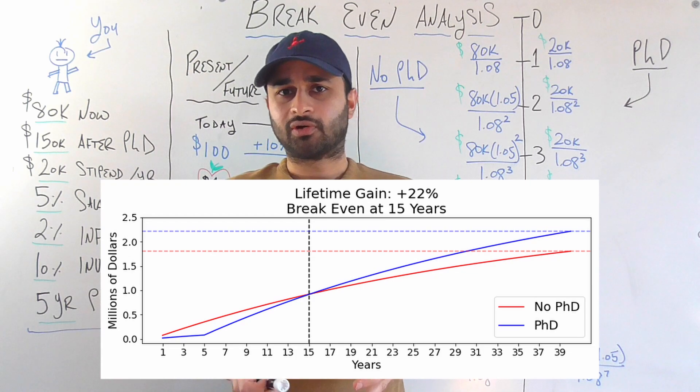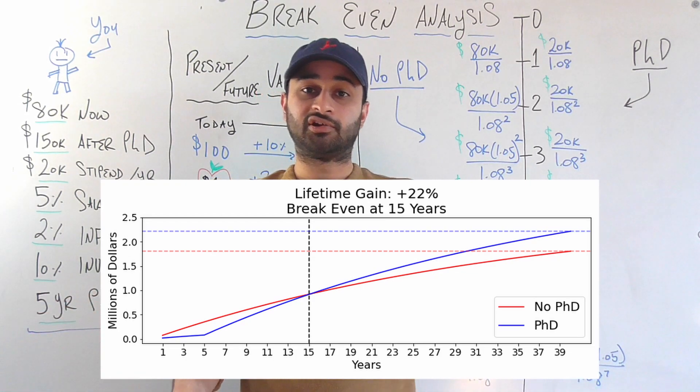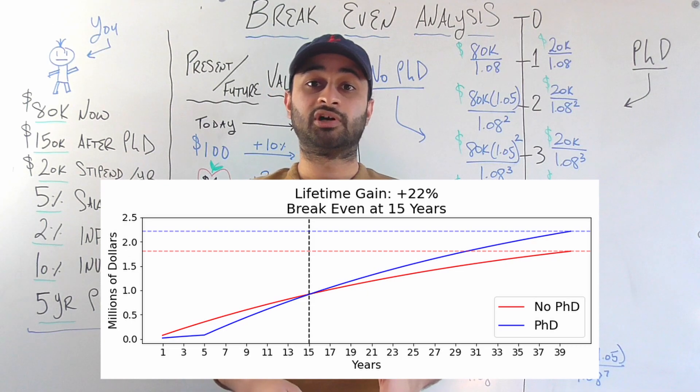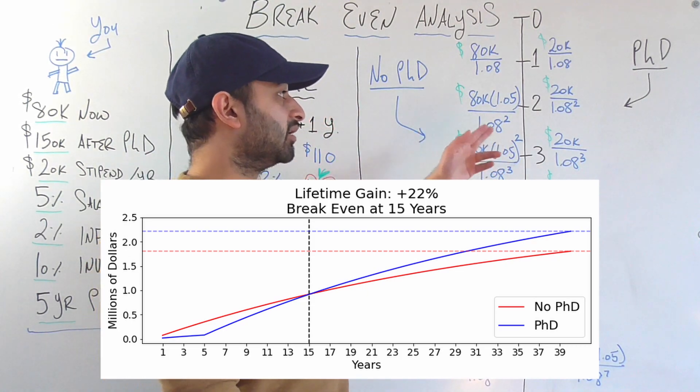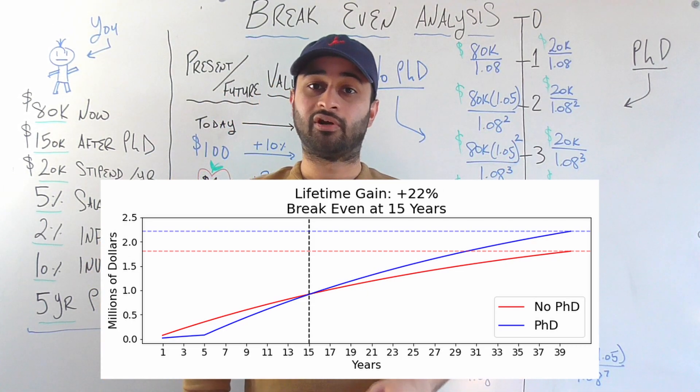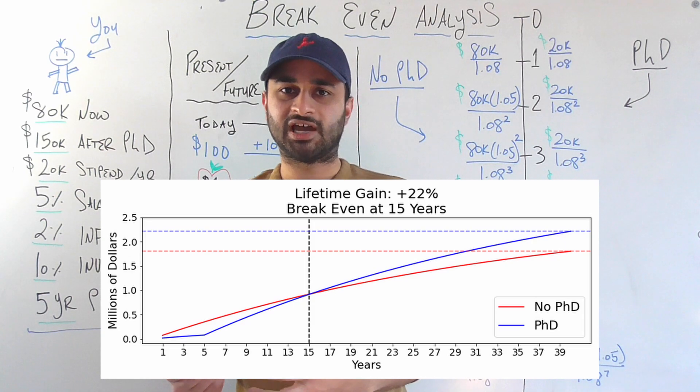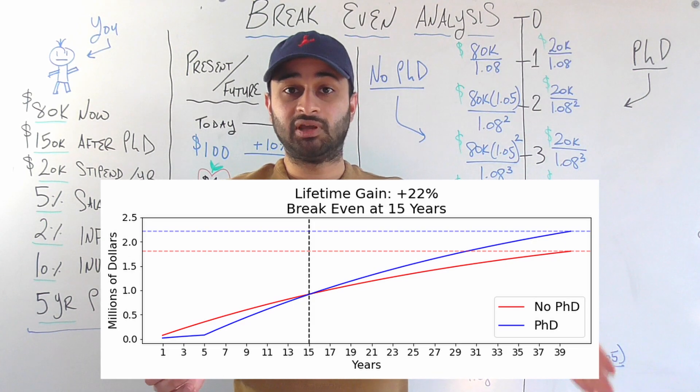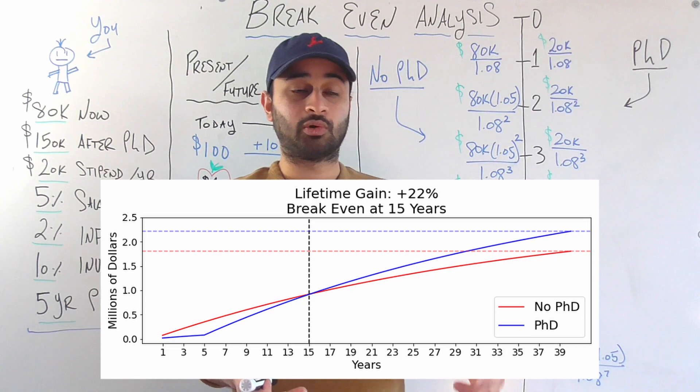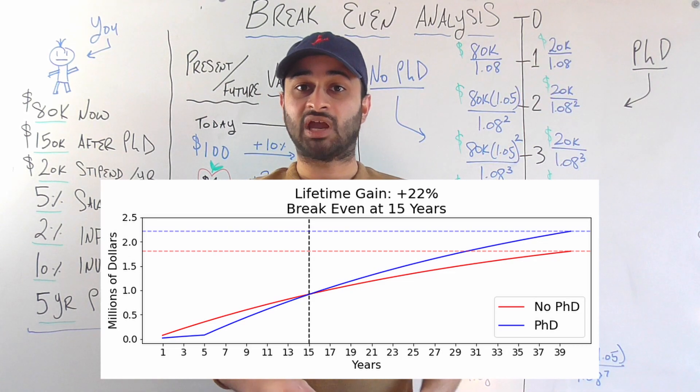And another number we get off this graph is that the total amount of money you're going to make in your lifetime, again, in terms of today's dollars, is 22% higher if you choose to get a PhD versus don't get a PhD. So another way you can attack this question is asking, first, is it worth it to wait 15 years for me? But also, is it worth it if I'm getting a 22% increase in my lifetime earnings?